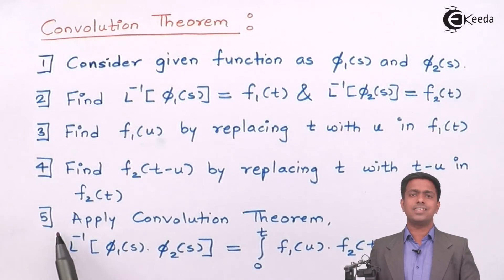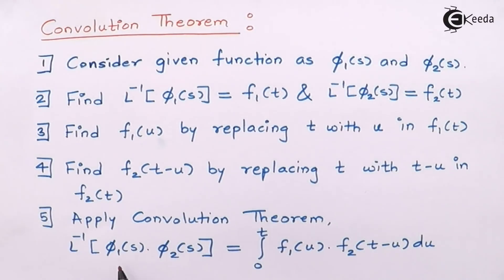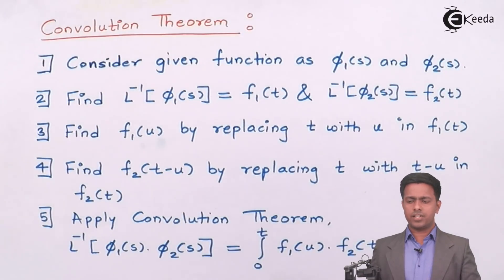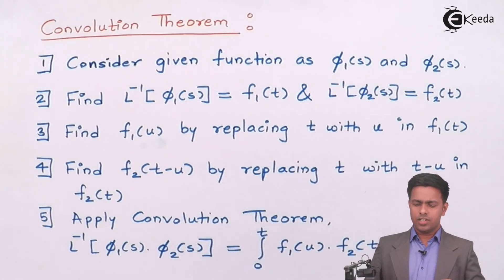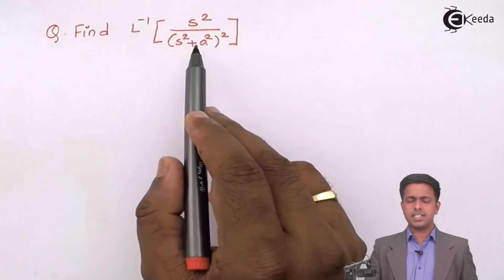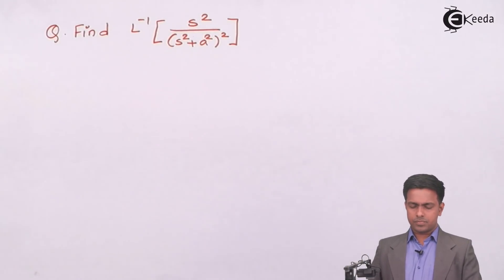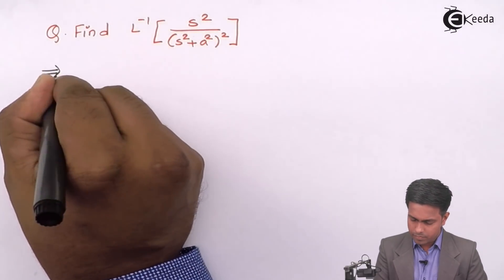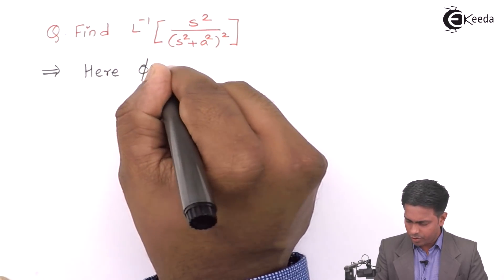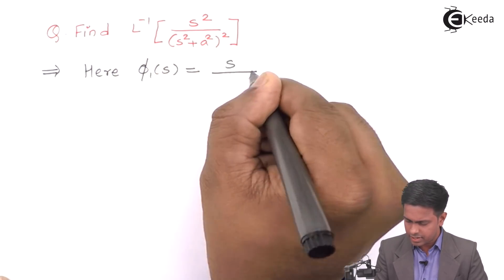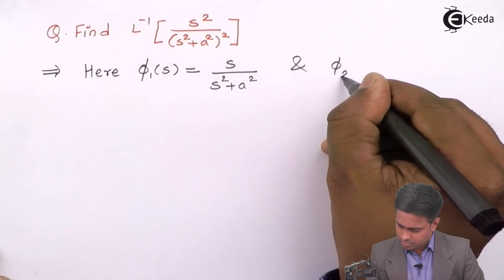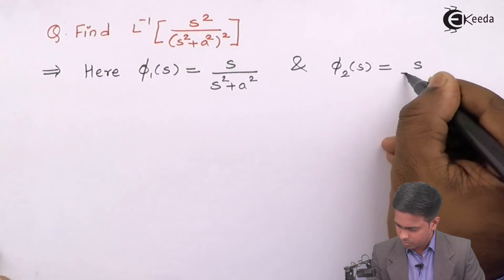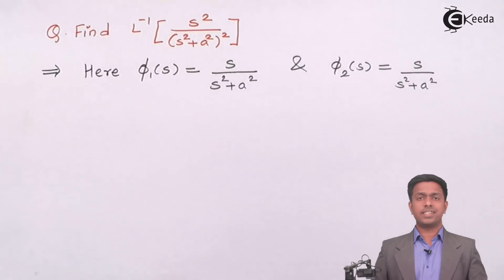Step number 5 is the convolution theorem which says that the inverse Laplace transform of any two functions of s which are multiplying each other is given by integration over 0 to t of f₁(u) · f₂(t − u) du. Here whenever a function is given, we have to identify φ₁(s) and φ₂(s). So in our case, the function is s squared upon (s squared plus a squared) the whole square.